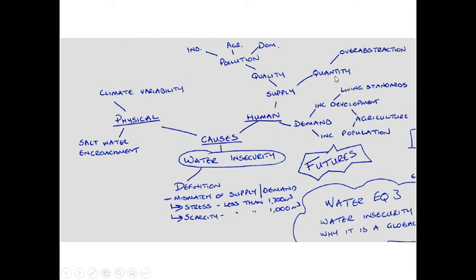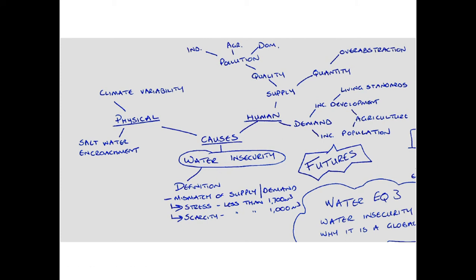Humans can also directly impact the quantity of water, mainly through over-abstraction, linked to lack of management or governance. Demand is also important — with increasing levels of development and rising living standards, people want more water. With increasing population, more water is needed for agriculture, industry, energy production, and manufacturing. There are lots of different factors relating to the causes of water insecurity.